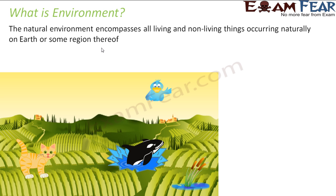For example, there are mountains — non-living things that exist naturally. Then there are animals: cats, dogs, lions, fish, and birds — everything that occurs naturally. Please note, the word 'natural' is very critical here. This is my environment.